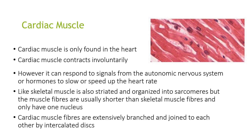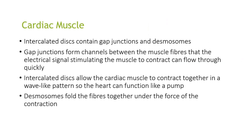Cardiac muscle is only found in the heart and contracts involuntarily; however, it can respond to signals from the autonomic nervous system or hormones to slow or speed up the heart rate. Like skeletal muscle, it is striated and organised into sarcomeres, but the muscle fibres are usually shorter and branched, with only one nucleus. Cardiac muscle fibres are extensively branched and joined to each other by intercalated discs, which contain gap junctions and desmosomes. Gap junctions form channels between muscle fibres allowing electrical signals to flow through quickly, enabling the cardiac muscle to contract in a wave-like pattern so the heart can function as a pump. Desmosomes hold the fibres together under the force of contraction.